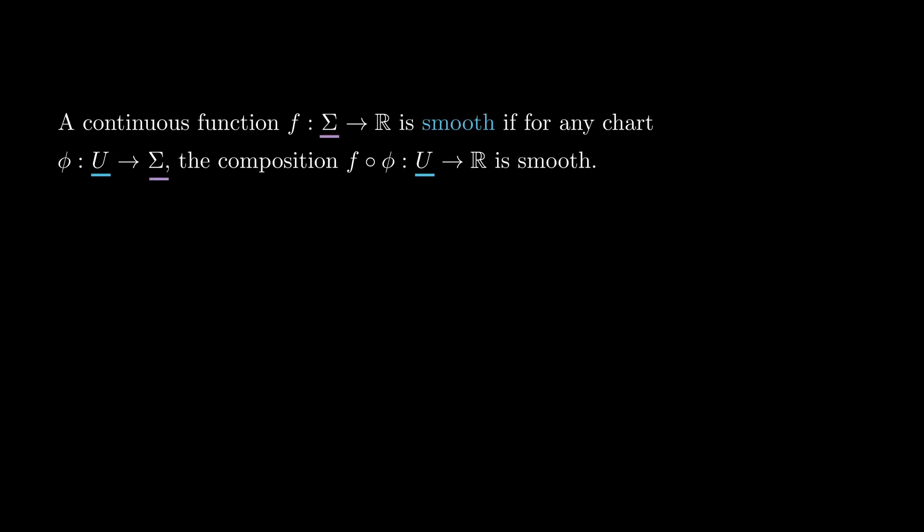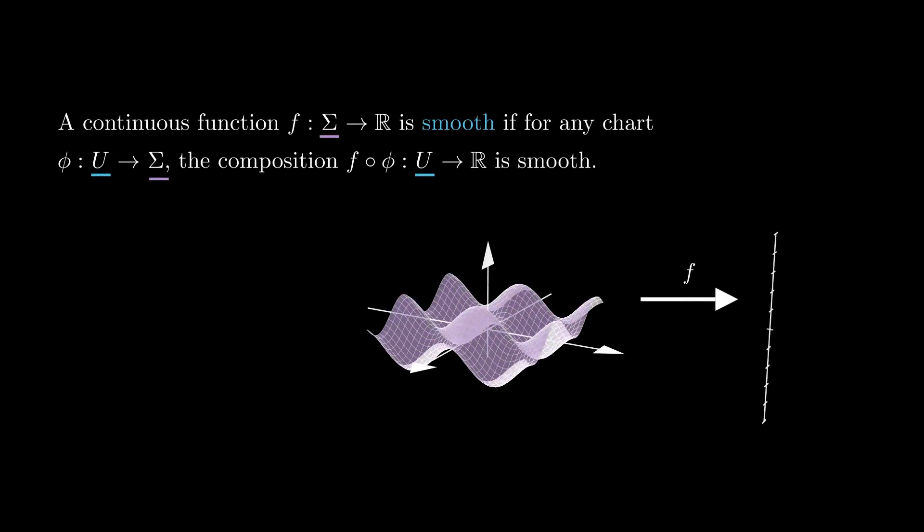Then we can define what it means for a continuous function f from a surface to rk to be smooth. We say that f is smooth if whenever we compose f with a chart, we get a smooth function from an open subset of the plane to rk.